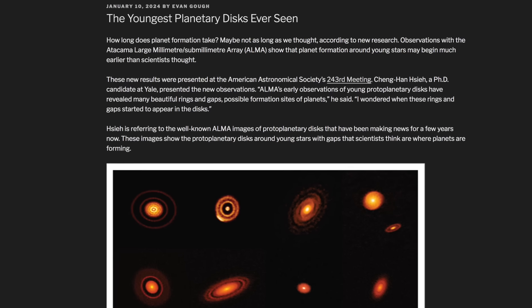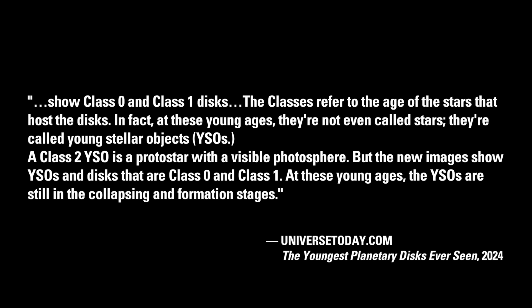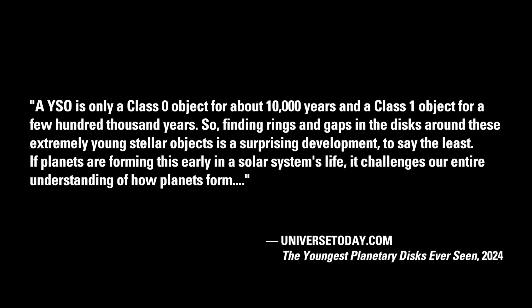What Dr. Hsieh found has stunned the astronomical community. As described in a piece on Universe Today, the ALMA images show Class 0 and Class 1 disks. The classes refer to the age of the stars that host the disks. At these young ages, they're not even called stars — they're called Young Stellar Objects or YSOs. A Class 2 YSO is a protostar with a visible photosphere, but the new images show YSOs and disks that are Class 0 and Class 1. At these young ages, the YSOs are still in the collapsing and formation stages. A YSO is only a Class 0 object for about 10,000 years, and a Class 1 object for a few hundred thousand years.